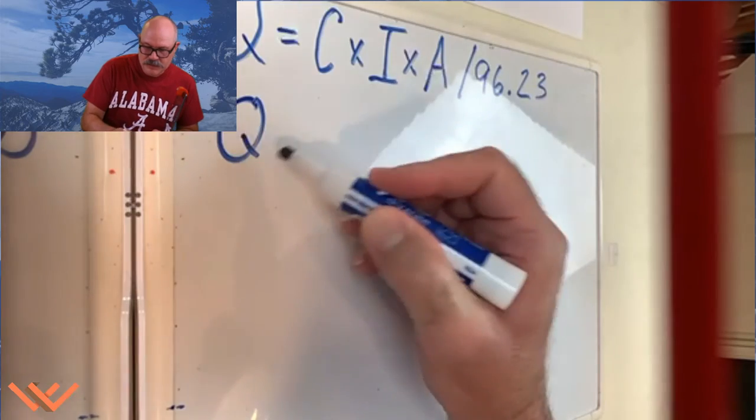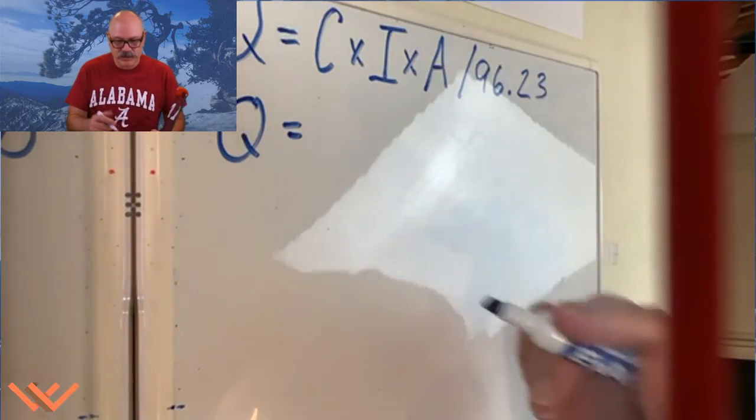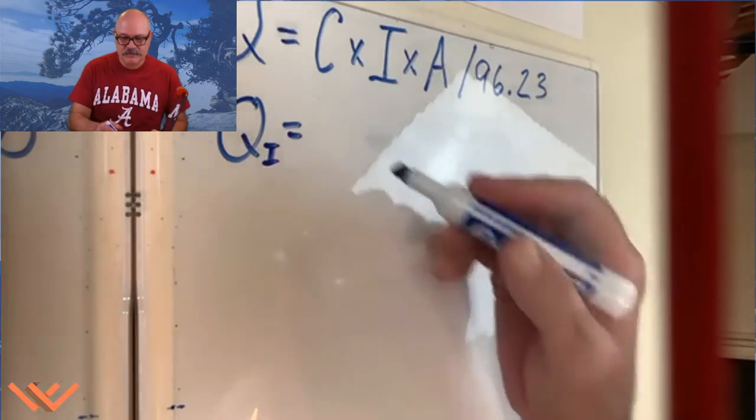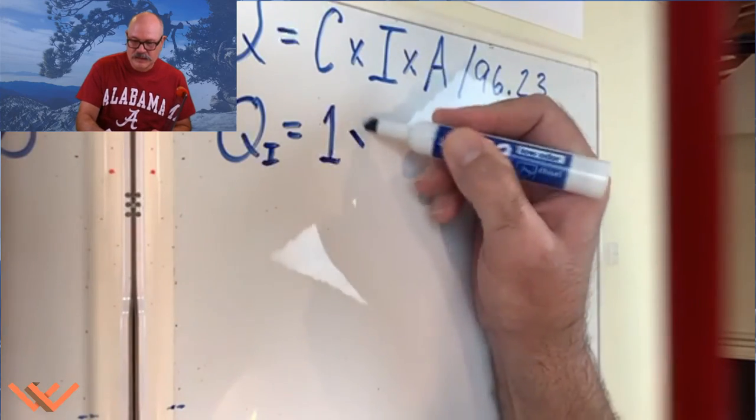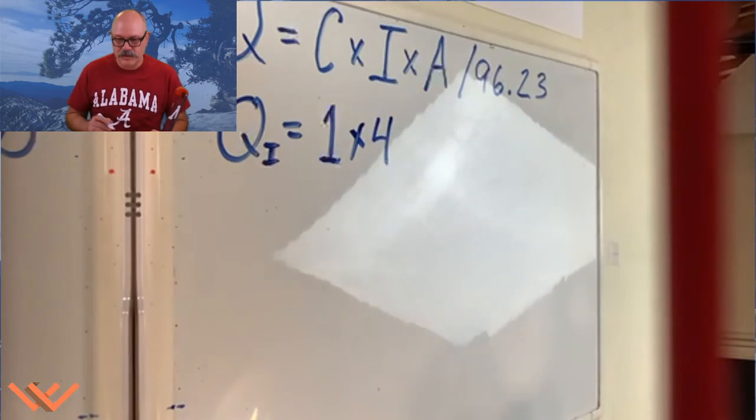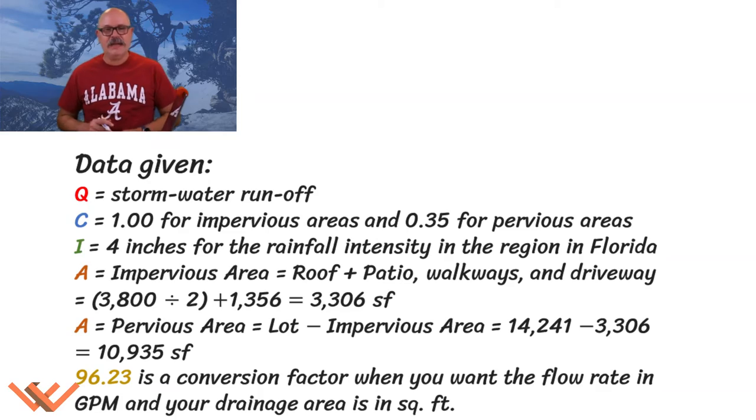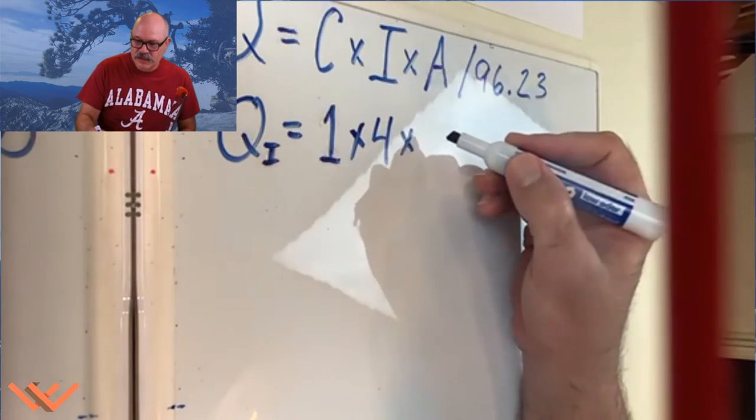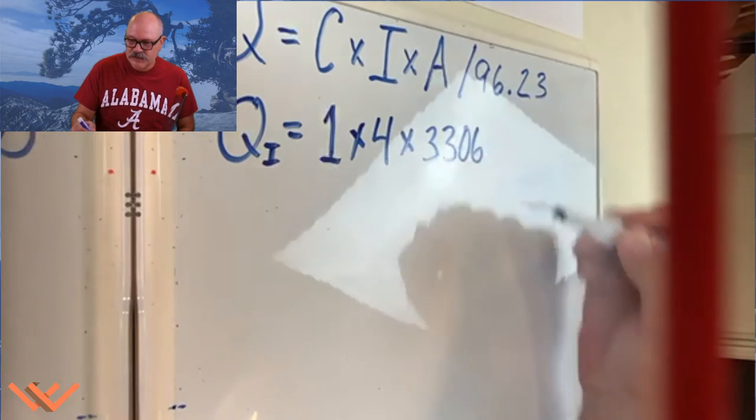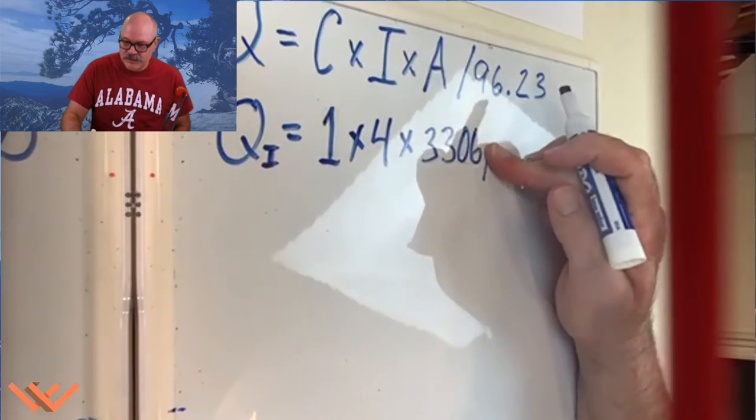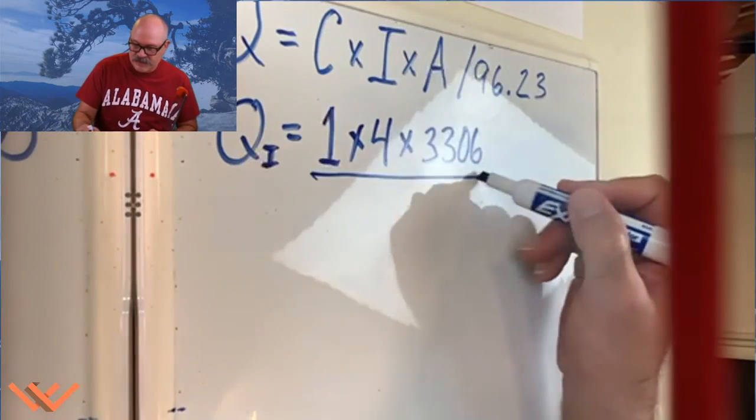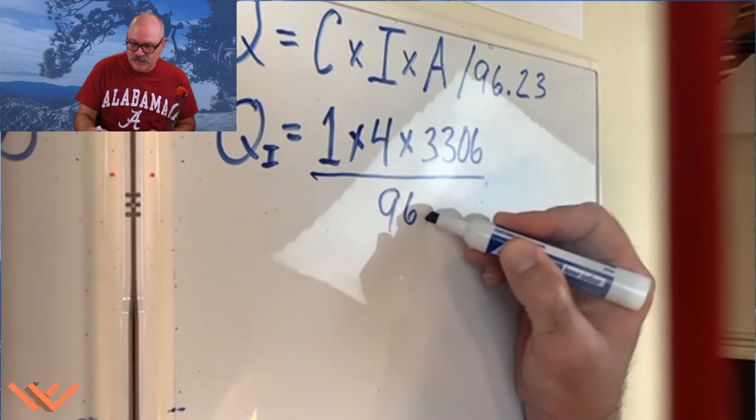Right here, I say Q is equal to C. So we're going to do the impervious, so I'm going to put an I there. So Q_I is equal to C, which is one, times... we looked at that map and it was four because it's four inches, times the area. Now the area for impervious is going to be the square footage of the roof divided by two, so it's half the square footage of the roof.